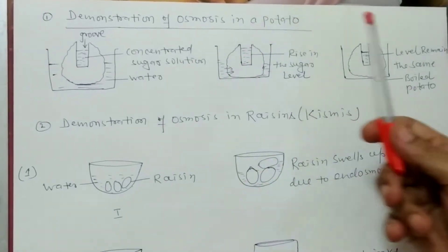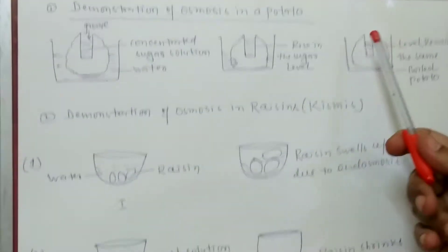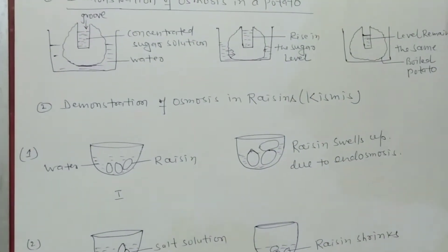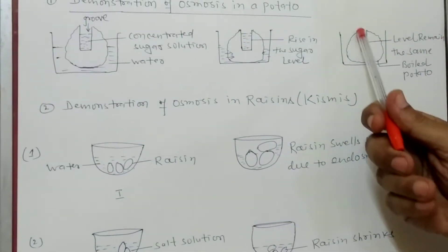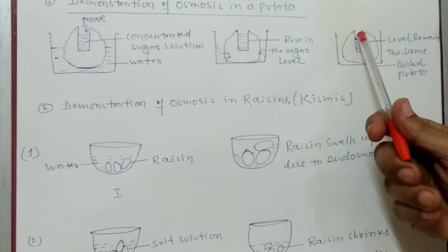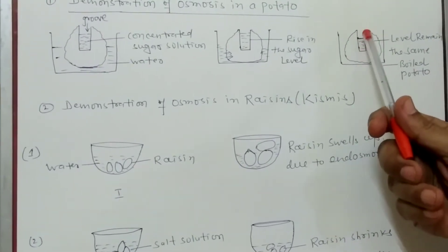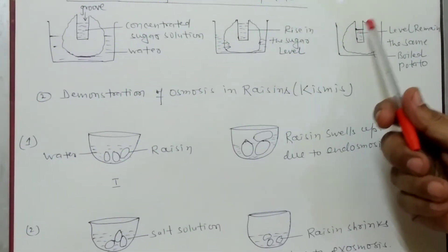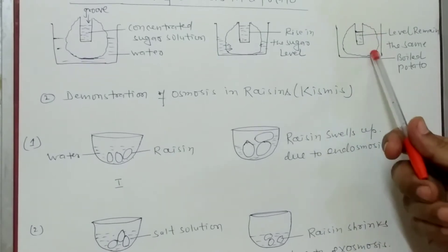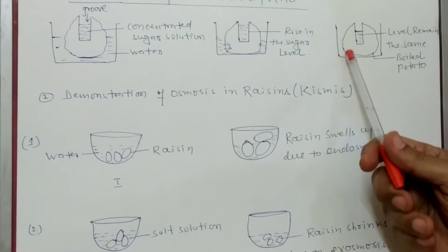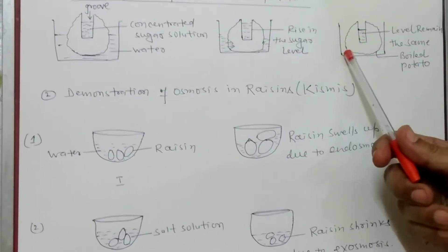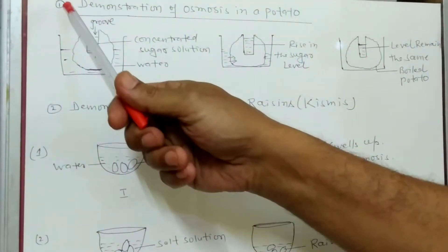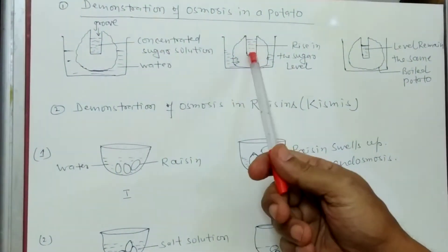Now if we take a boiled potato in place of the normal potato — since the boiled potato has dead cells, the cell membranes are ruptured — and we put it in the water and fill the groove with sugar solution, there will be no change in the level of the sugar solution. Because this is a boiled potato with dead cells, there will be no movement of water from outside to inside. So the level of sugar solution will remain the same. This first experiment demonstrates the process of osmosis in the potato.